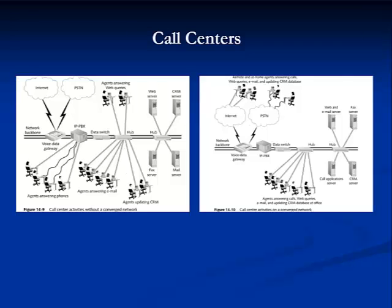Call centers are good candidates for converged networks. They can merge telephone calls with email, voicemail, and customer relationship management programs called CRMs, to provide quicker and better customer service.